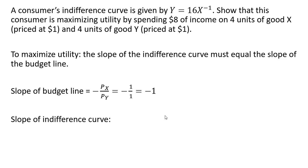The slope of the indifference curve—so here's our indifference curve. To get the slope of it, we're going to take the derivative of the indifference curve with respect to good X. Doing that, we get the following result: minus 16 divided by X squared.